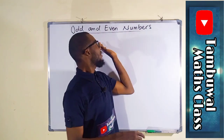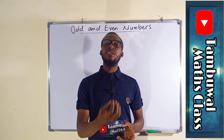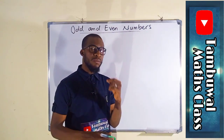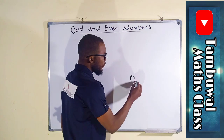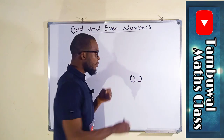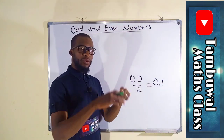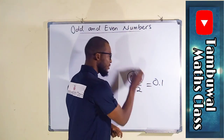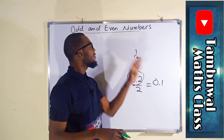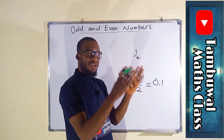Let me first of all start with even numbers. So many people define them as any number that is divisible by two. When we say any number, we are referring to the set of real numbers. For example, 0.2 is a real number which is a decimal number, and this number is divisible by two because you will obtain 0.1. But decimal numbers are not even numbers, and fractions — we don't define them as even or odd numbers.